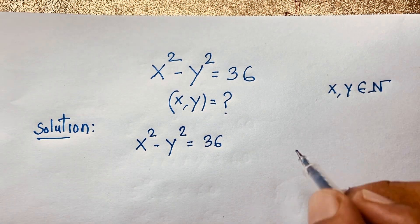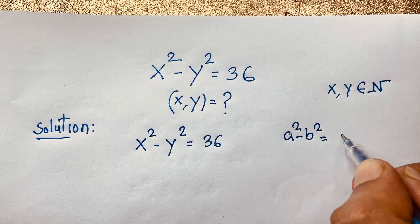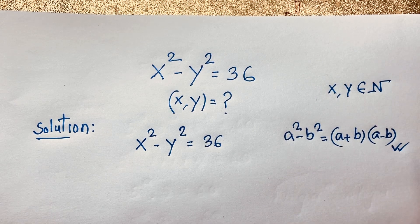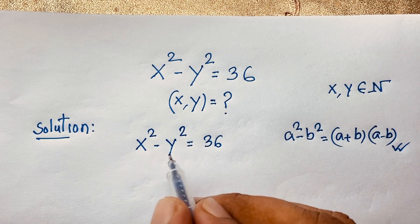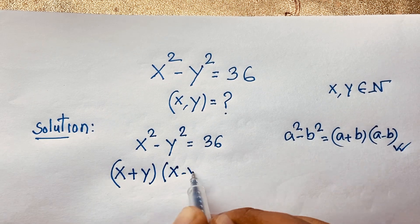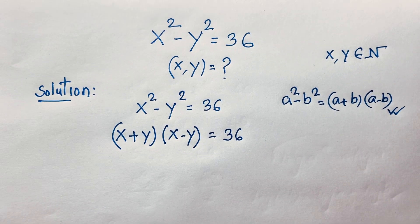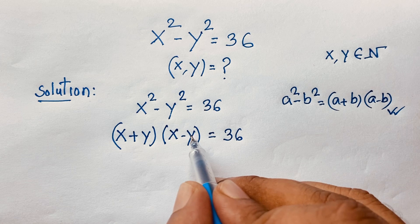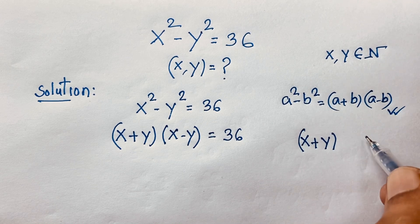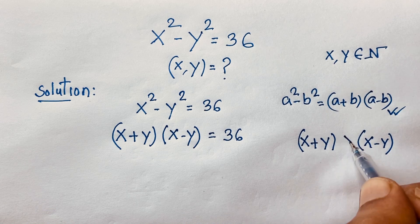We know that a squared minus b squared equals (a plus b)(a minus b). Following this formula, we can write x squared minus y squared as (x plus y)(x minus y) equals 36. Note that x plus y is always greater than x minus y.